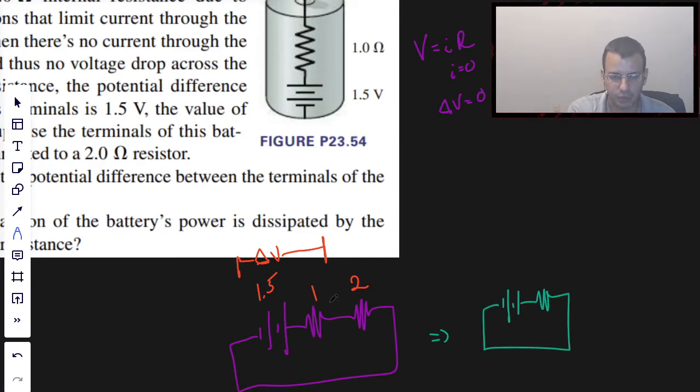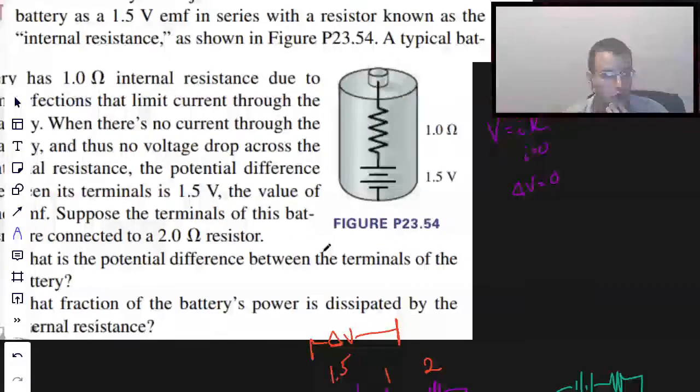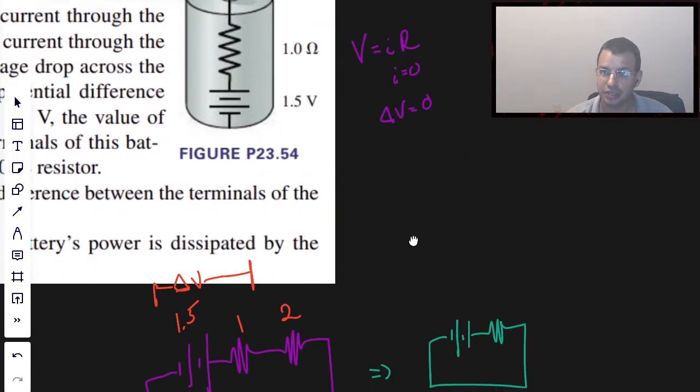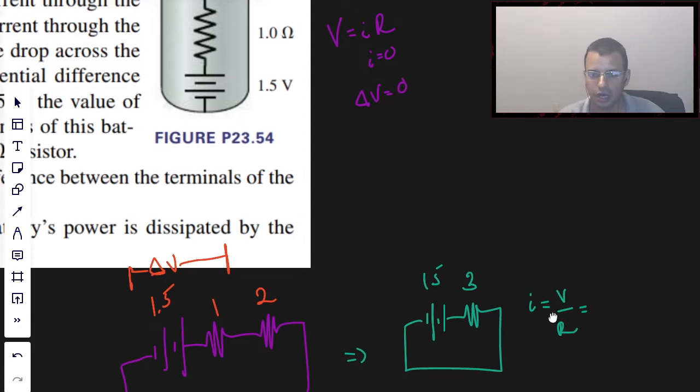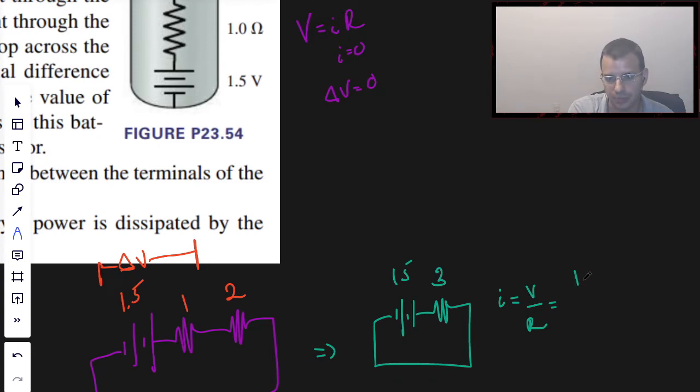So combining 1 and 2, they are 1 and 2 ohm resistors in series, so we combine them by just adding them. 1 plus 2 is 3, this is 1.5. Current equals voltage divided by resistance, which is the opposition to the flow of current. Voltage is 1.5, resistance is 3. 1.5 divided by 3 is 0.5 amps.